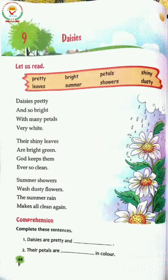Pretty — the spelling of pretty is P-R-E-T-T-Y. Pretty means Sundar, Pyara. Second word is Bright — B-R-I-G-H-T. Bright means Chimkila.